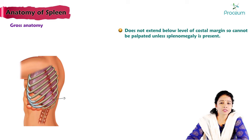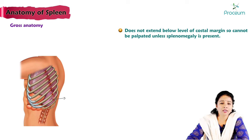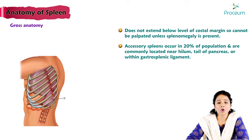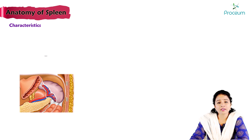Normally the spleen does not extend beyond the level of the costal margin, so we cannot palpate it unless there is splenomegaly. Accessory spleens occur in 20% of the population and are commonly located near the hilum and tail of the pancreas, or within the gastrosplenic ligament.